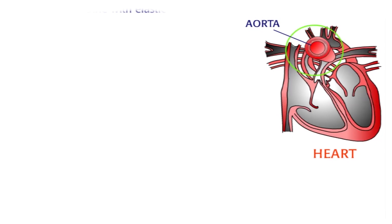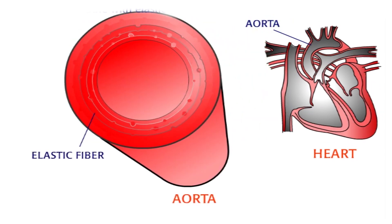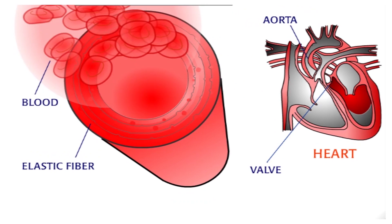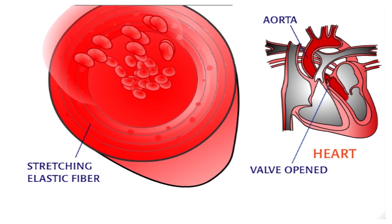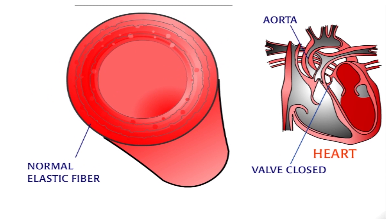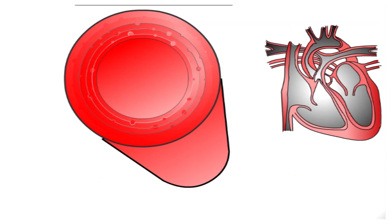The large blood vessel that carries blood out of the heart is called the aorta. In the walls of the aorta, microfibrils combine with elastic fibers to make the aorta stretchy. When the heart ejects blood into the aorta, the force of the blood causes the vessel to expand, stretching the elastic fibers, which then return to their original size, bringing the aorta back to its unstretched diameter.